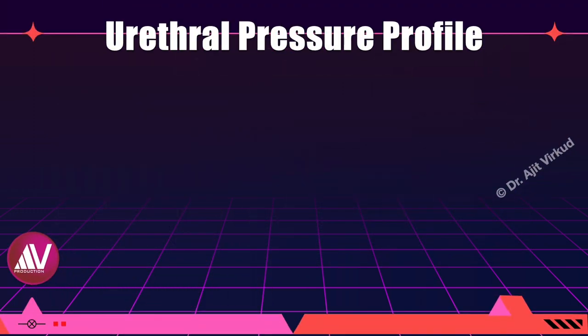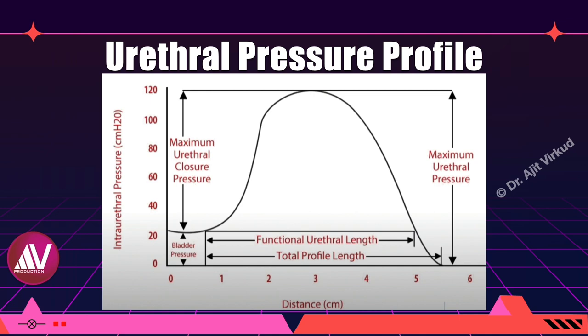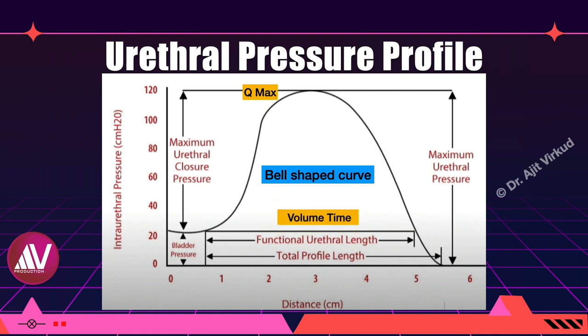This is a diagrammatic representation of the uroflowmetry pressure profile. Normally the UFP is a smooth bell curve. If the voided volume is less than 150 to 200 ml, the study may not be accurate. Q-max is the maximum urine flow rate sustained for at least one second. The normal Q-max is 20 to 36 ml per second; some consider 15 as the lower limit. A prolonged intermittent flow rate may be abnormal. A low Q-max could be due to obstructive voiding or detrusor hypercontractility. Q-average is the volume of urine voided divided by flow time; it is not accurate and therefore not that important.